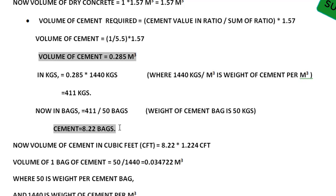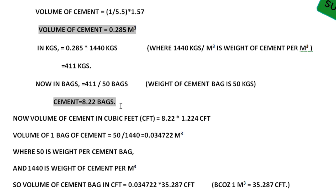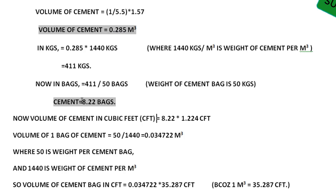Now we'll convert this value to cubic feet. For volume of cement in cubic feet, we multiply the number of bags by 1.224 cft. So 8.22 bags × 1.224 cft per bag. Let's look at the derivation of this 1.224 cft value.